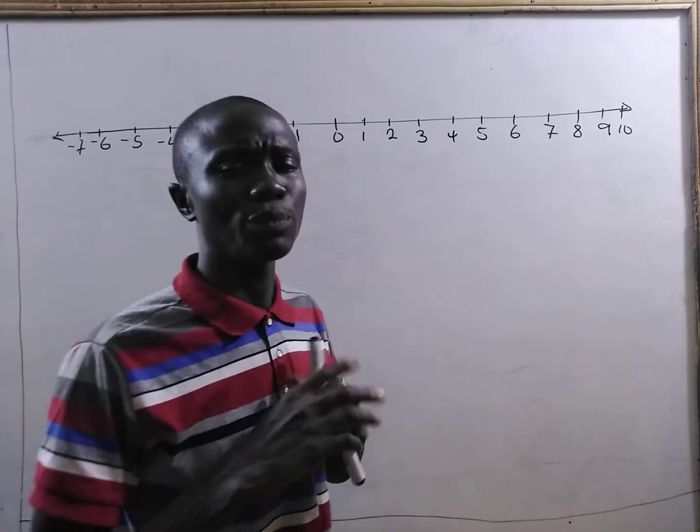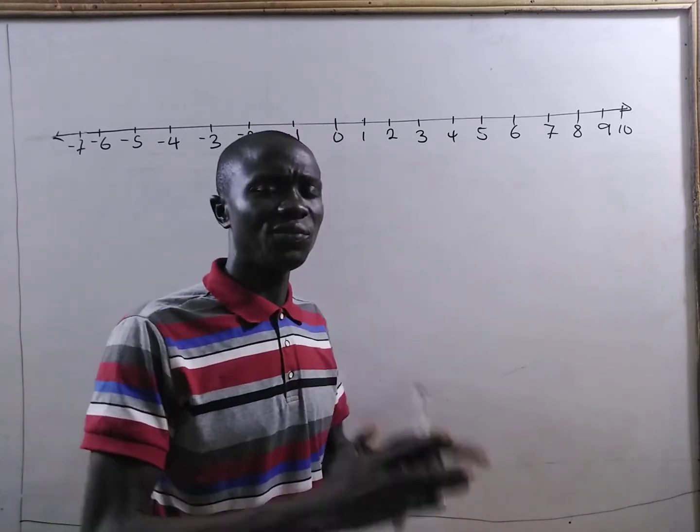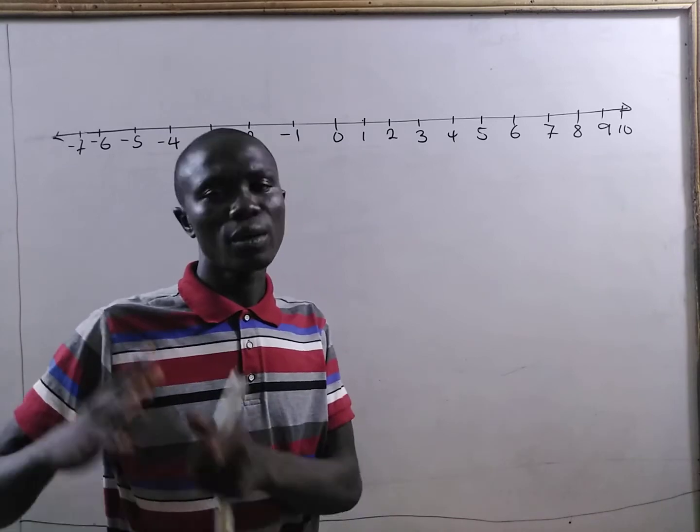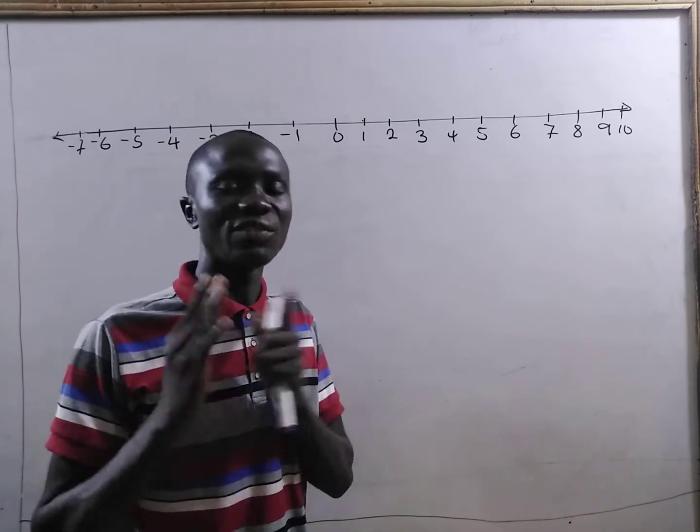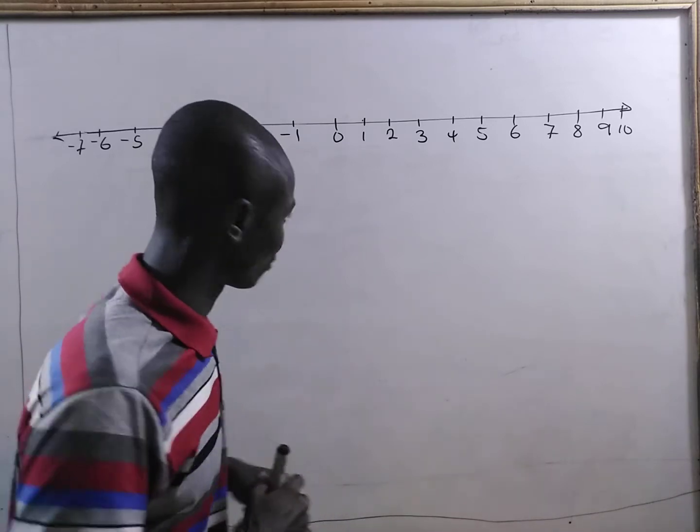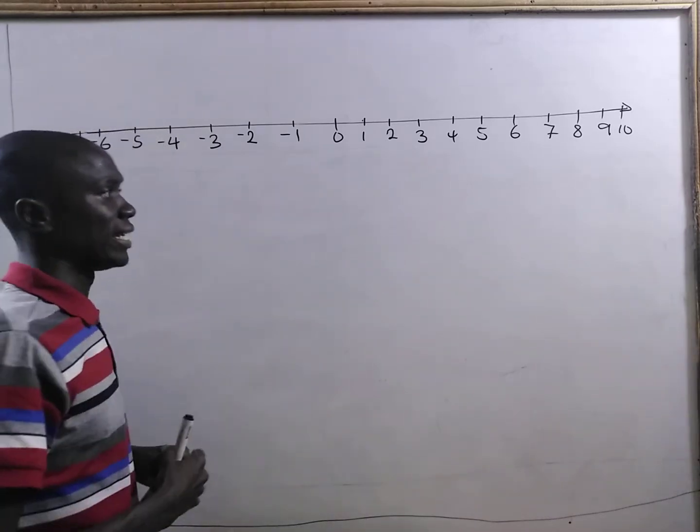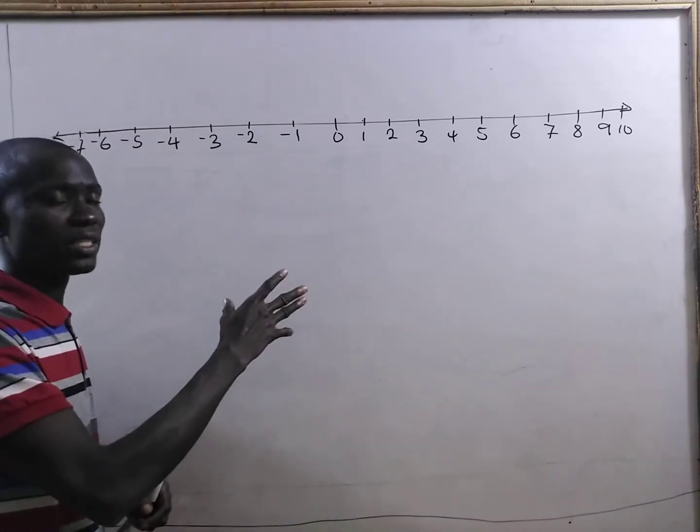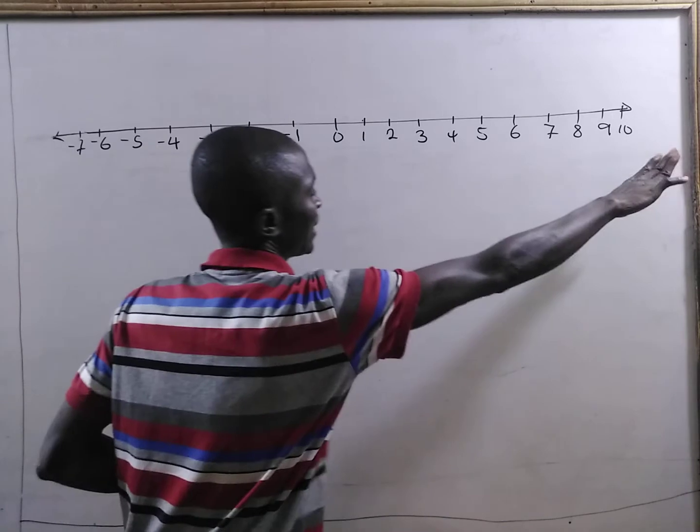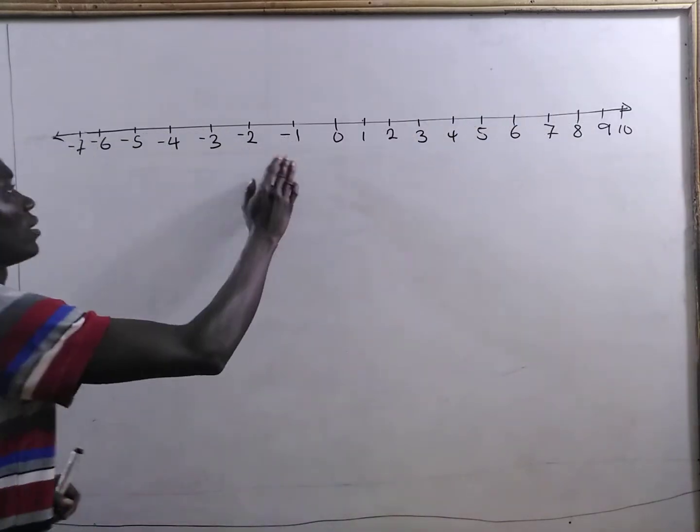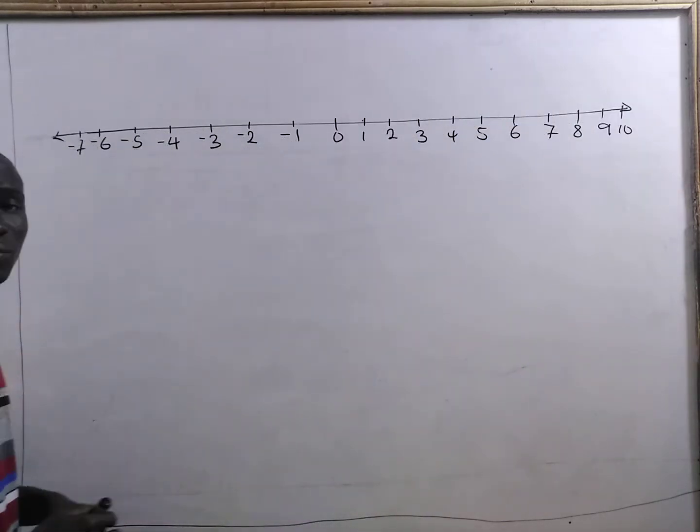In this lesson, I'm going to explain why negative negative equals positive. Now, we have our number line here. I have drawn it in this way. You can extend this to positive any number. You can also extend this to negative any number.